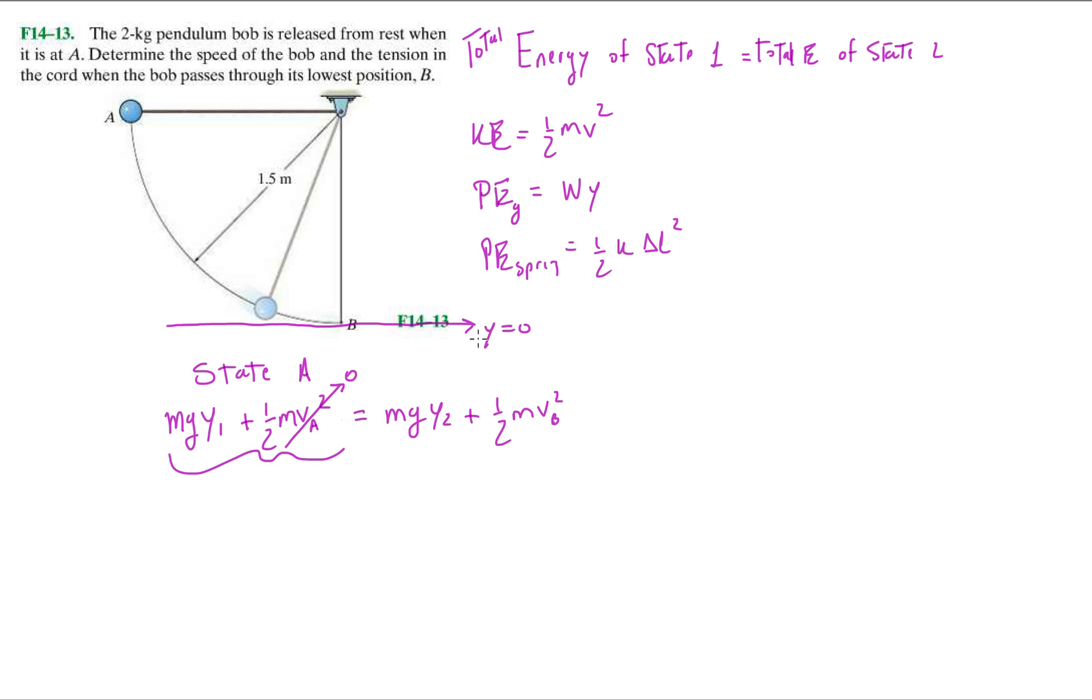If it's released from rest at A initially it has zero kinetic energy, so this term goes to zero. Determine the speed of the bob and the tension in the cord when the bob passes through its lowest position B. If I declared my zero potential y equals zero at state A, point B, which means y2 is zero, which means that potential at state B is zero.